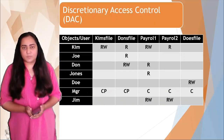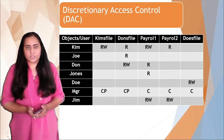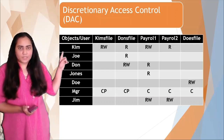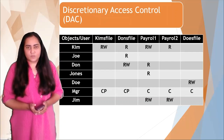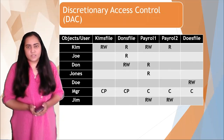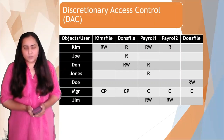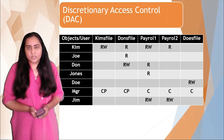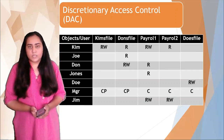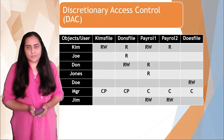On the left-hand side you can see different types of users — those are the names of the users. On the topmost row you can see different types of objects, which are the files available for access in the database. For example, next to Kim it is written RW, which means Kim has the right to read and write into Kim's file. For MGR, which stands for manager, you can see CP on two files and C on three files — meaning the manager has control with passing ability on Kim's file and Don's file, and control over the remaining files. This is how a discretionary access control mode works by creating an access control matrix.